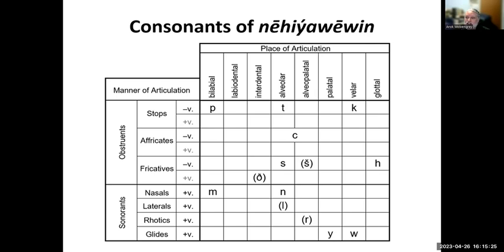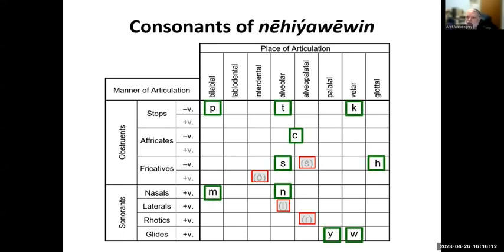I did want to say a little bit about the structure of the language before we get into resource development. This is a phonological chart of the consonants of Cree. The ones in brackets are not found in Plains Cree — they're found in one or another of the dialects. The esh sound does not occur in the westernmost western dialects, so anything in Saskatchewan and Alberta doesn't mark that distinction. Whereas further east, you get the phonemic difference between s and esh. When you remove all the dialect-specific sounds, what you're left with is 10 consonants — a fairly small consonant inventory in Plains Cree.